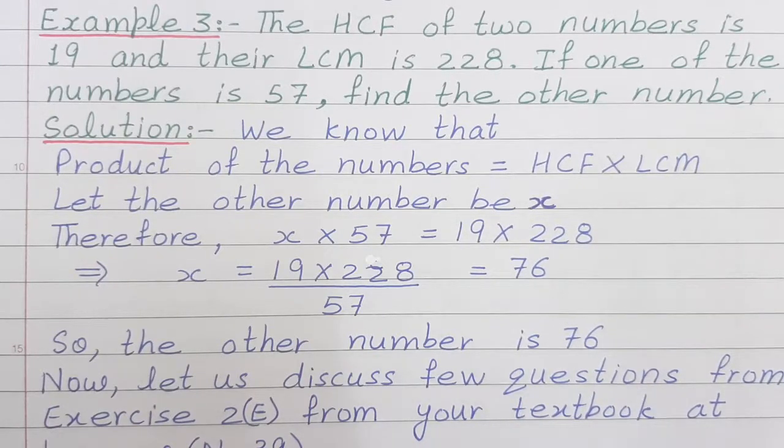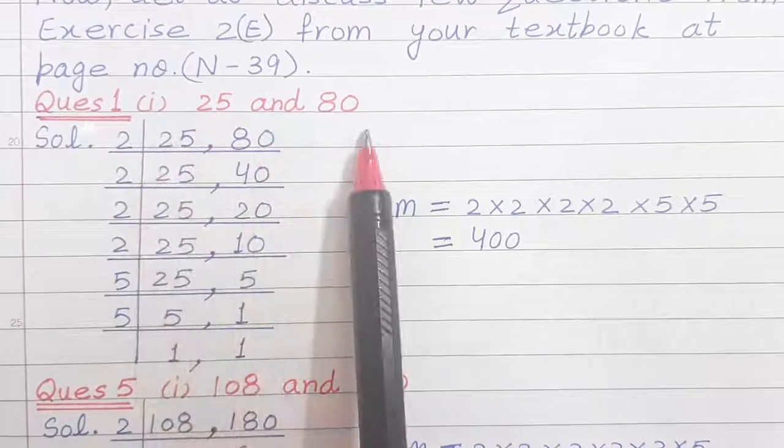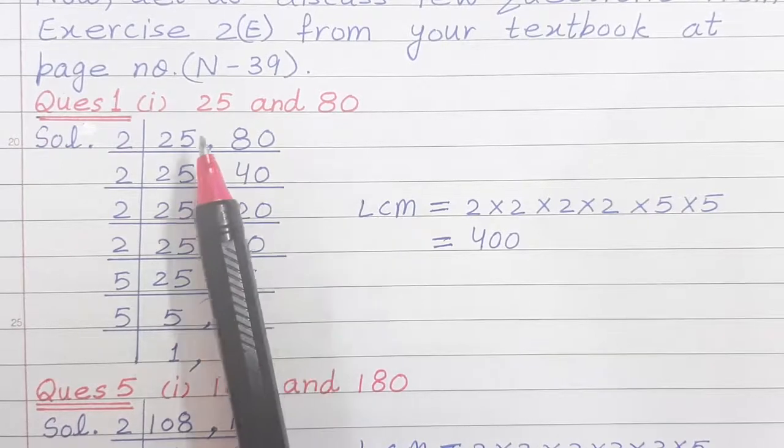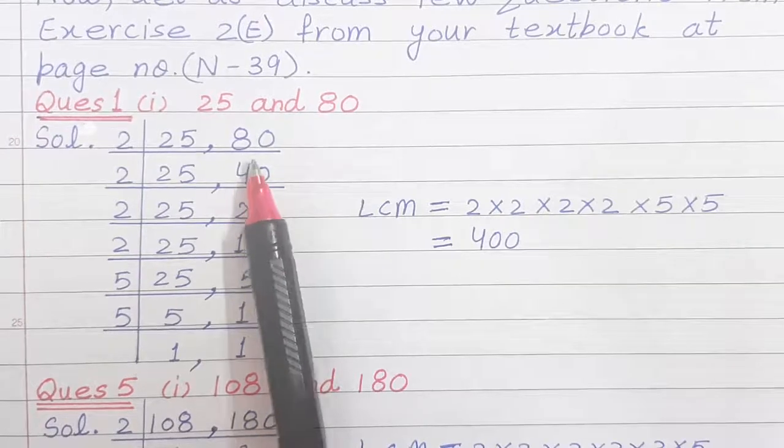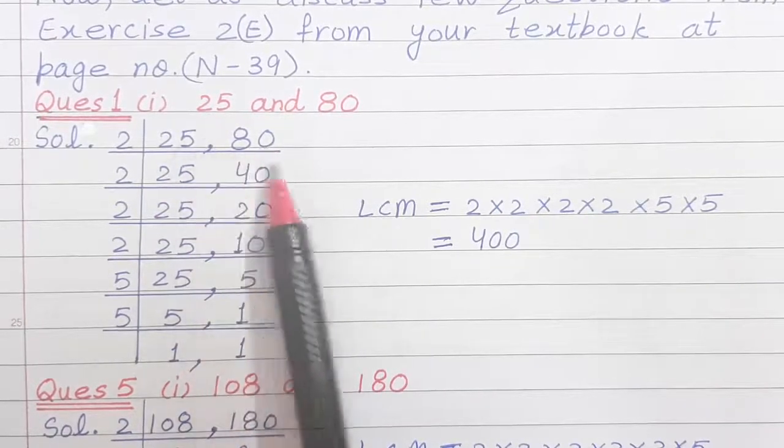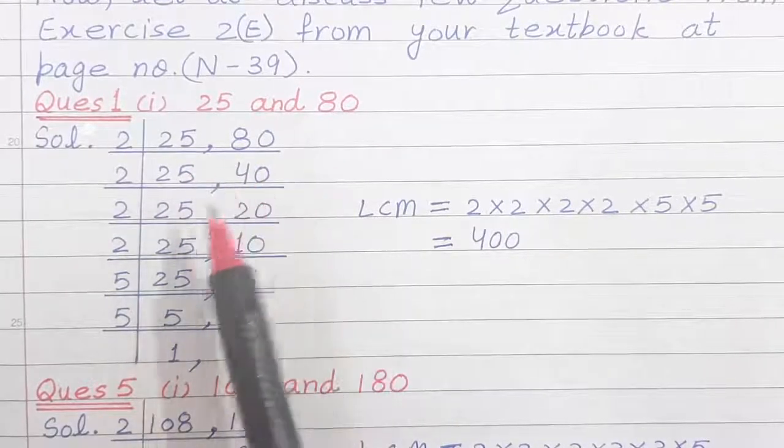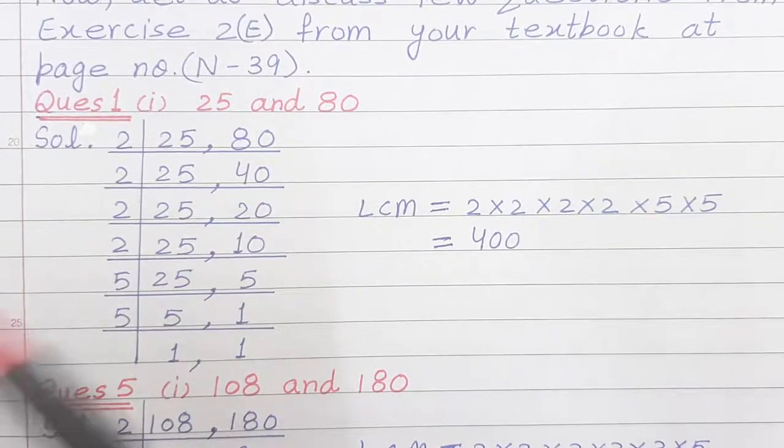Now children, let us discuss few questions from exercise 2E from your textbook, which is given at page number N39. So, question number 1, first part is 25 and 80. Students, in this question, it is given to find the LCM by prime factorization method. But you are allowed to do with any method. Either you go with prime factorization method or you can do with common divisor method. So, here I have taken the common divisor method.